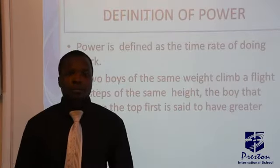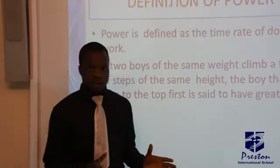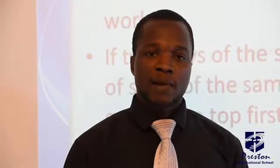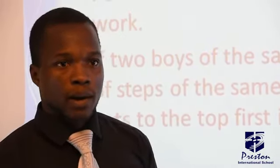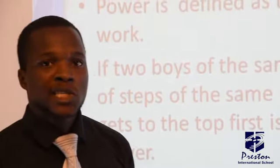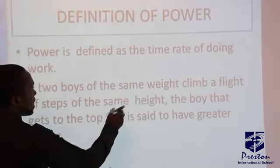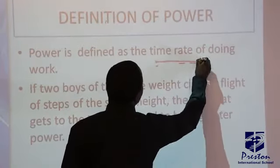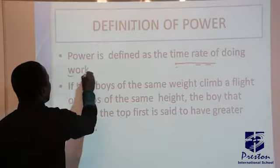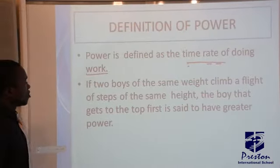So what is power? Power is defined as the time rate of doing work. We have looked at work and energy before now. For example, if it takes a man 100 joules of energy to do a particular work at a particular time, then when you get the work divided by the time, you have what is called power. And don't forget, the power we are looking at today is mechanical power — that is, the rate at which you do a particular work is called power.